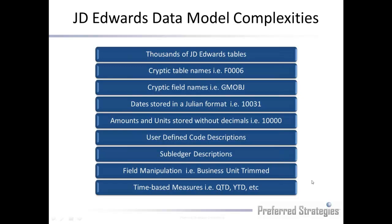Some of the data model complexities: if you've ever looked behind the scenes of the J.D. Edwards interface and at the data itself, you'd see thousands of tables with cryptic names like F0006, and field names like GMOBJ — these represent things like the business unit master table or an object account field. The dates are stored in a Julian format which needs to be converted to Gregorian to be used. Amounts and units are stored without decimals, there are user-defined code descriptions, subledgers, and even calculating things needed for day-to-day reporting like year-to-date, quarter-to-date, actuals, and budgets all need to be handled. That's one of the first things that makes J.D. Edwards reporting difficult.